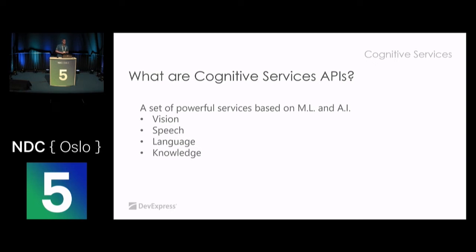Another service that comes with Cognitive Services is Knowledge, based on a lot of information found on the web and in university databases - you can find very detailed information in that. Closely related is the Search API, which is based on the Bing search engine from Microsoft. We only have an hour, so I'll cover the Vision API, speech, and particularly the natural language understanding - where I can give a command to the computer and it acts accordingly.